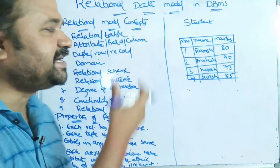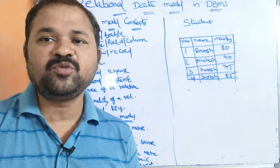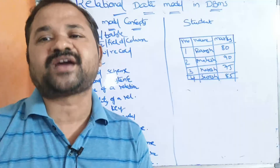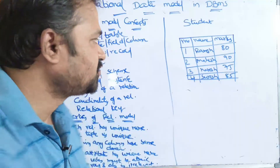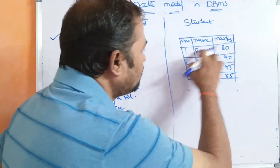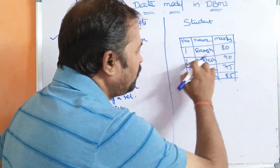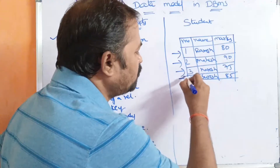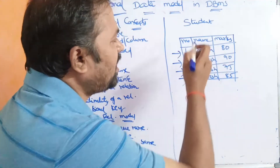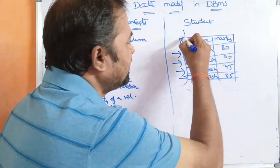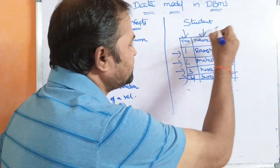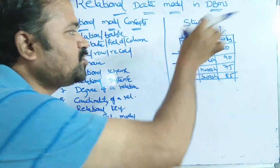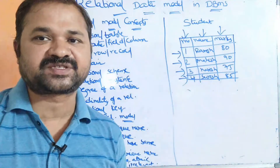So what is a table? A table means it is a collection of rows and columns. Here we have four rows — first row, second row, third row, fourth row — and three columns. So this table is made up of four rows and three columns.